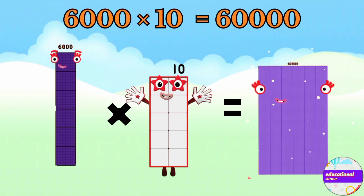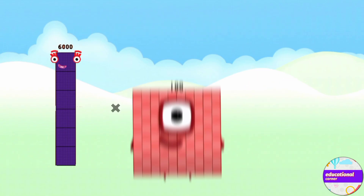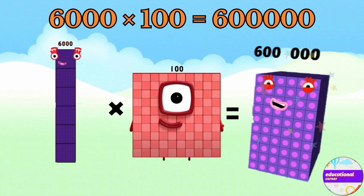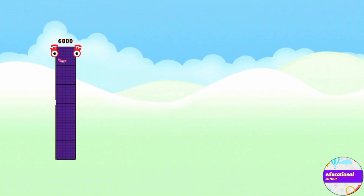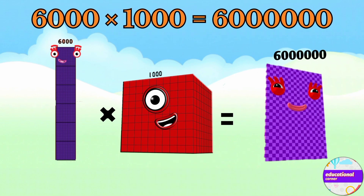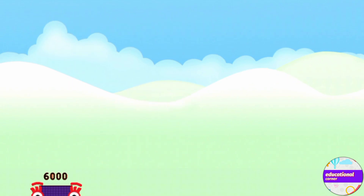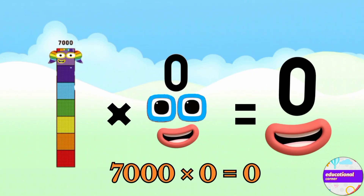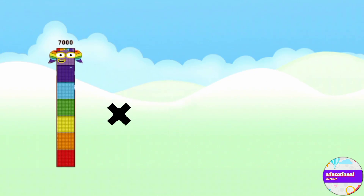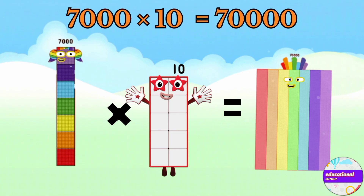Six thousand multiply by hundred equals six hundred thousand. Six thousand multiply by thousand equals six million.